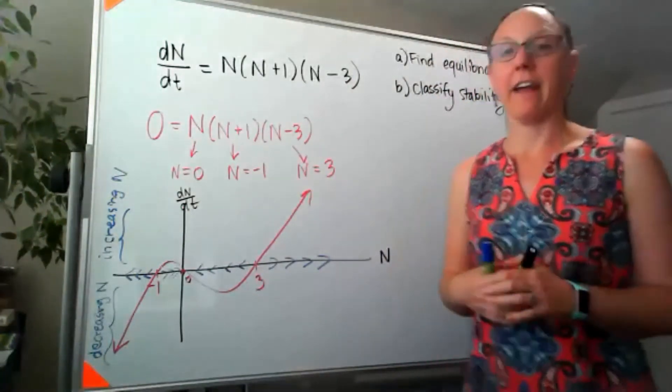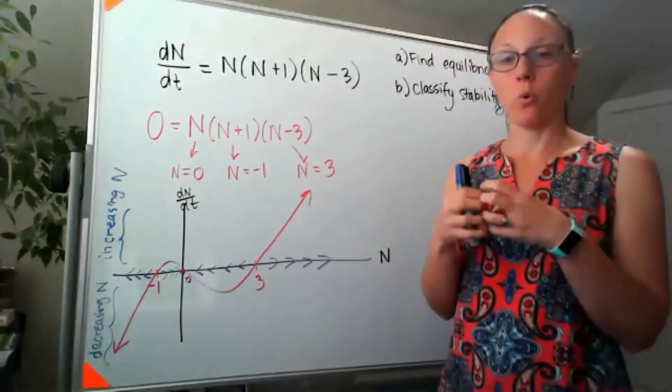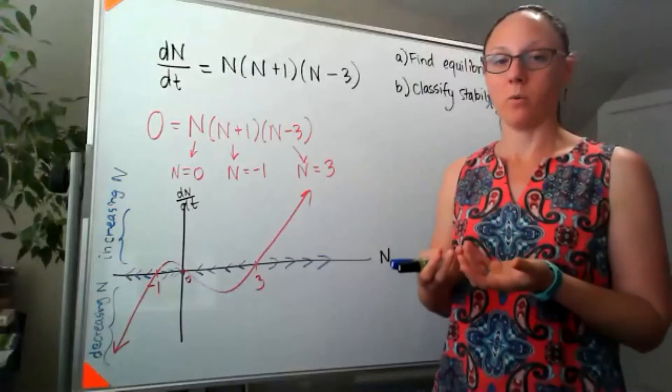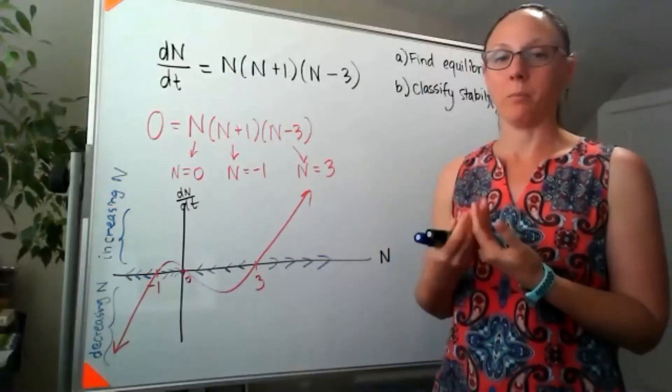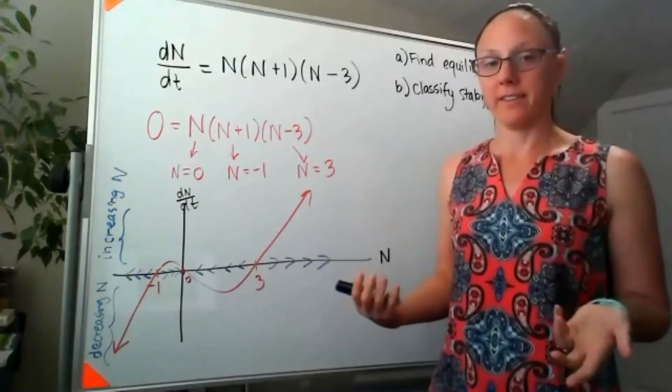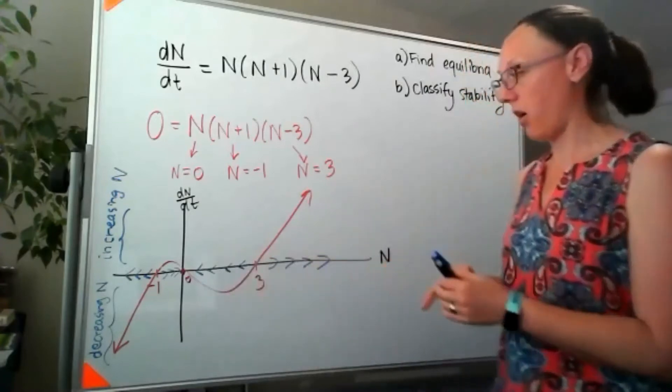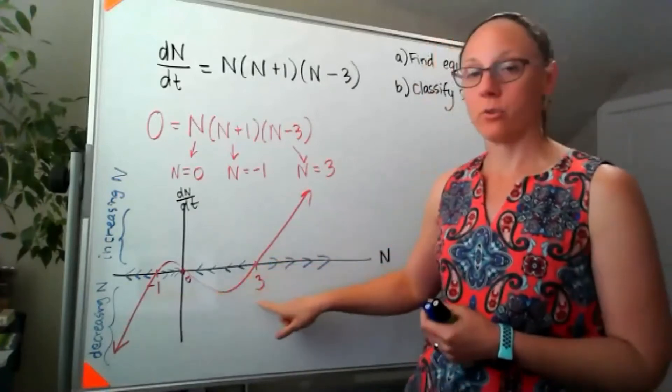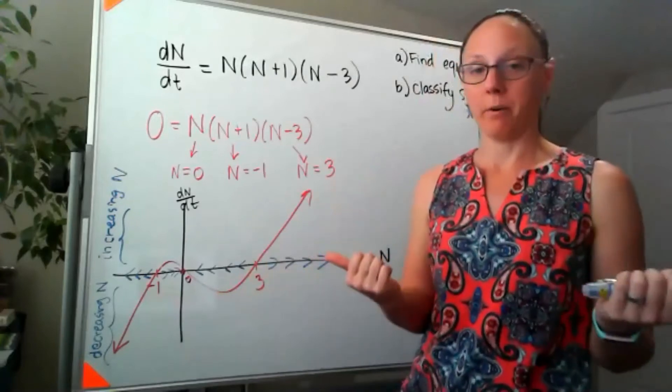Looking at the graph, anywhere that I'm getting pushed towards is considered a stable equilibrium. And anywhere I'm getting pushed away from is unstable. So looking at our plot now, both negative one and three have all of the arrows moving away from them.